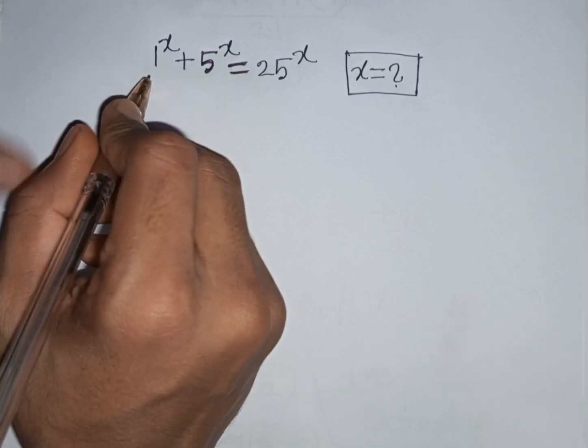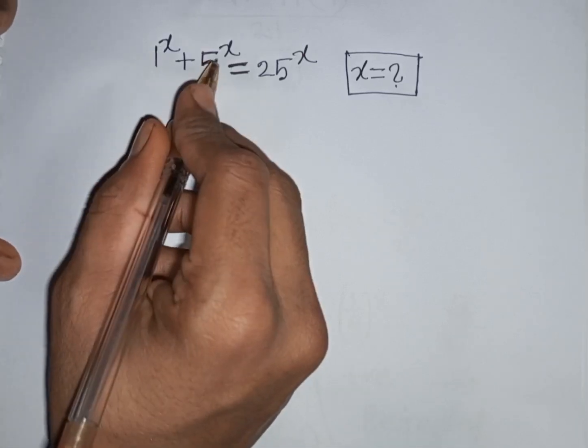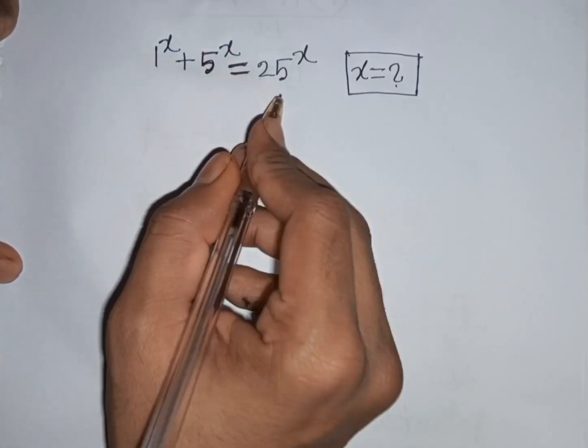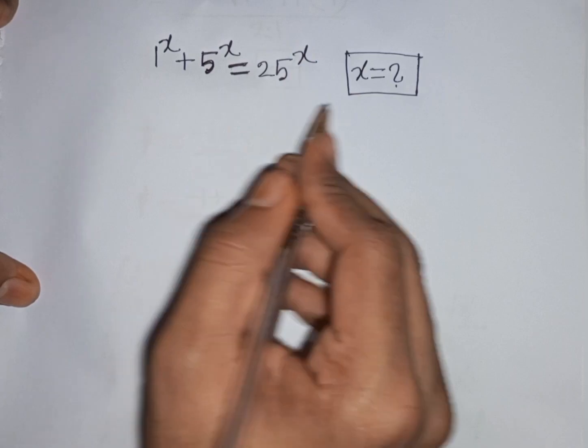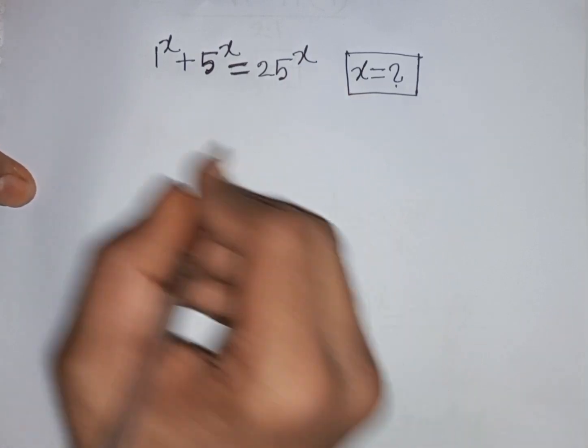How to solve 1 power x plus 5 power x is equal to 25 power x. Find the value of x.